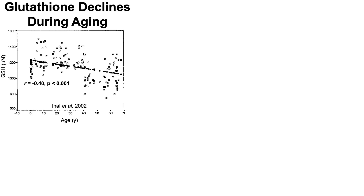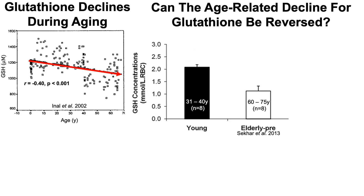However, glutathione declines during aging. Glutathione levels plotted on the y-axis against age show a steady, significant decline. The obvious question is: can the age-related decline in glutathione be reversed?